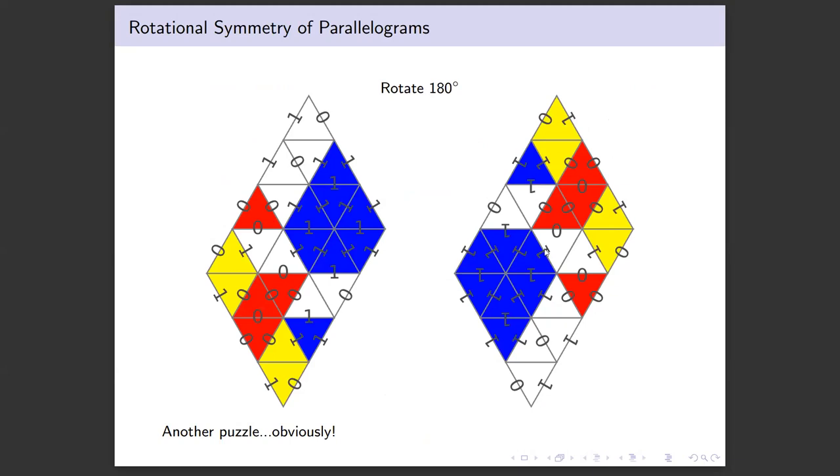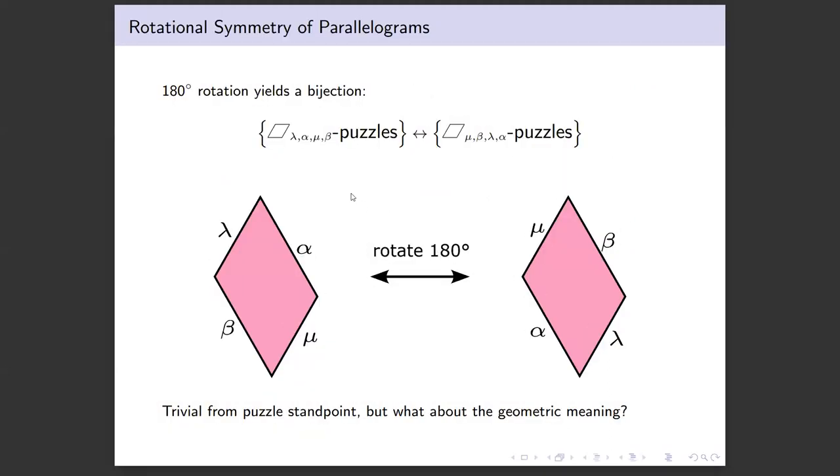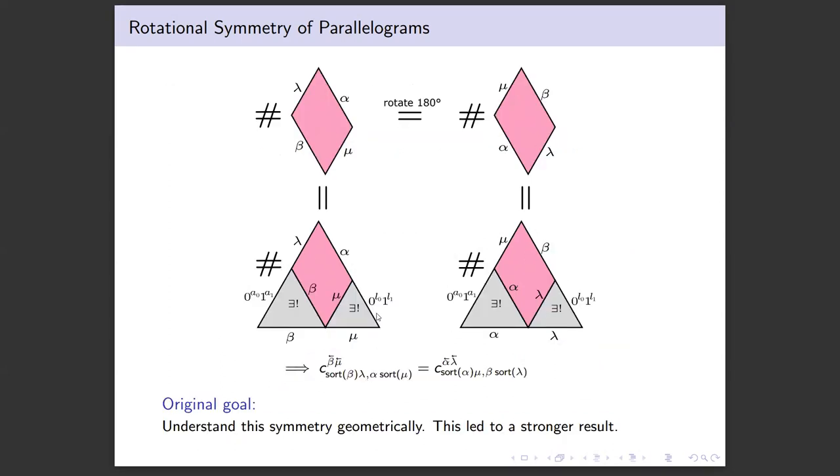If you rotate this parallelogram puzzle 180 degrees, you get another one of the same sort. This rotation gives us a bijection from parallelogram puzzles with labels going around this way to the rotated version. That is silly from the puzzle perspective, but we want to ask about the geometric meaning. Let's put those two bijections together. We follow with the triangle completion, rotate the parallelogram 180 degrees, and complete that again. Now alpha and beta are swapped, and same with lambda and mu.